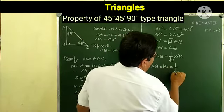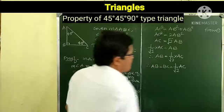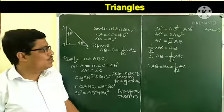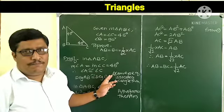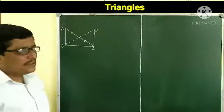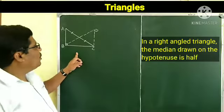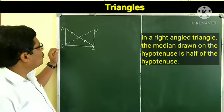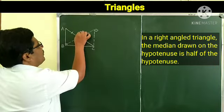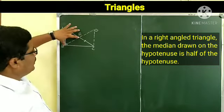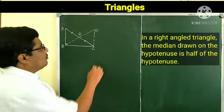In this way we have proved the 45-45-90 property. Now we learn a theorem about the median on the hypotenuse. The median drawn to the hypotenuse — here called BE — is half of the hypotenuse.